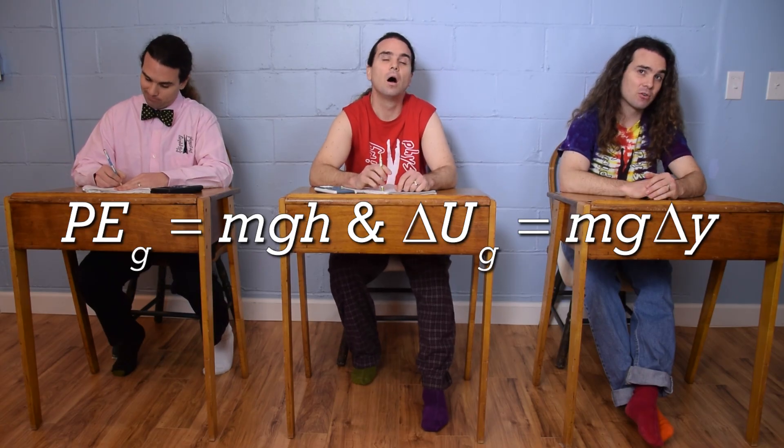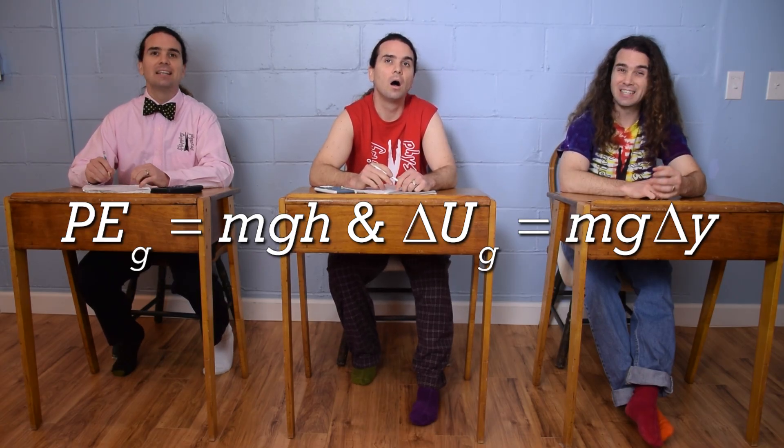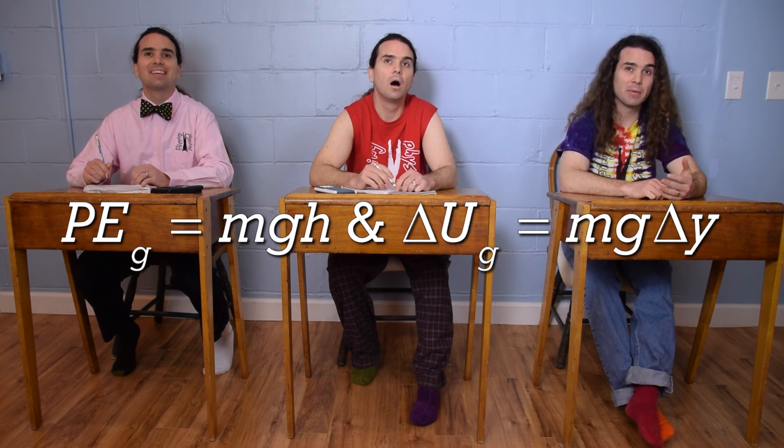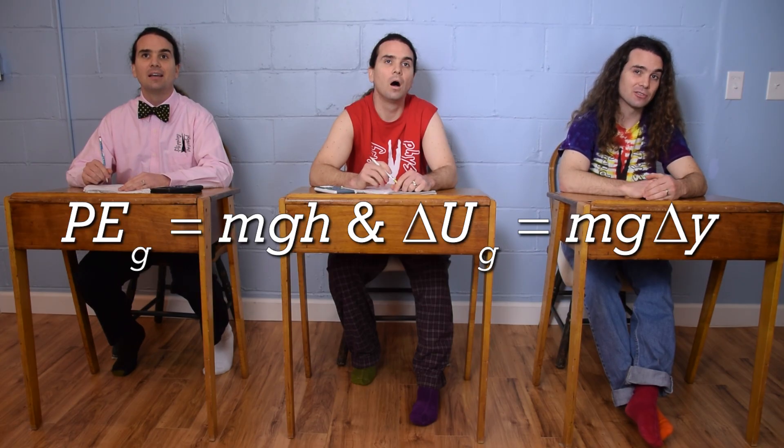You have to identify a horizontal zero line before you begin a problem. Gravitational potential energy can be negative if the object is below the horizontal zero line, which would make the vertical height above the zero line negative. Oh, and we should remember that work and energy are scalars.